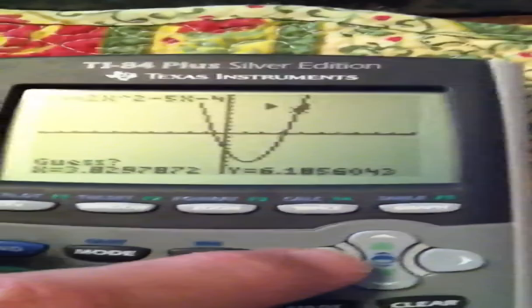Now we're going to use our arrow keys and move it to the right of that imaginary vertical line. I'm going to hit enter. And now I put it on the zero, which is a guess, and I hit enter.